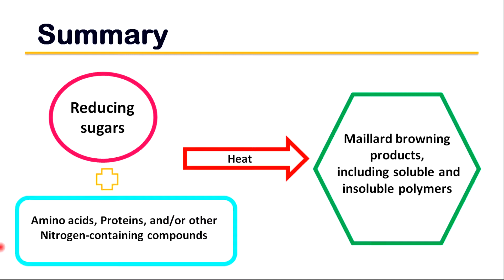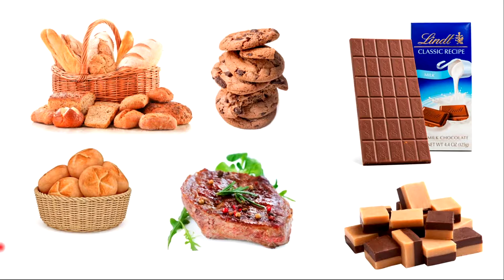In summary, Maillard browning products — including soluble and insoluble polymers — are formed where reducing sugars and amino acids, proteins, and other nitrogen-containing compounds are heated together. For example, soy sauce and bread crust. Browning is desired in baking and roasting of meats. The volatile compounds produced by non-enzymatic browning or the Maillard reaction during baking, frying, or roasting often provide desirable aromas. Maillard reaction products are also an important contributor to the flavor of milk chocolate, caramels, toffees, and fudges, in which reducing sugars react with milk proteins.